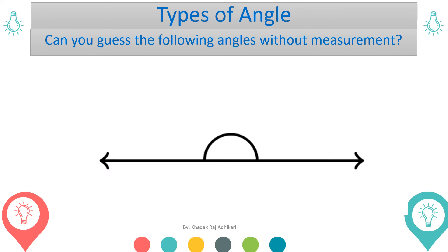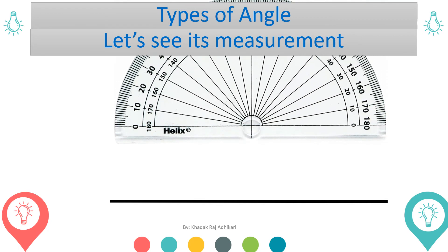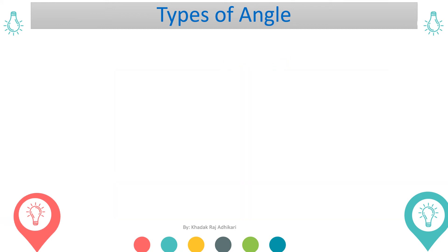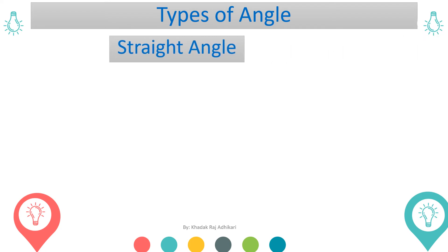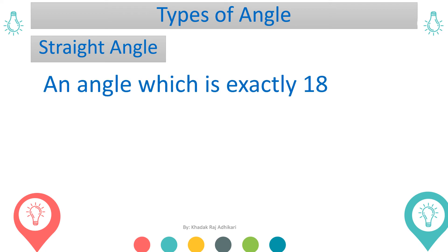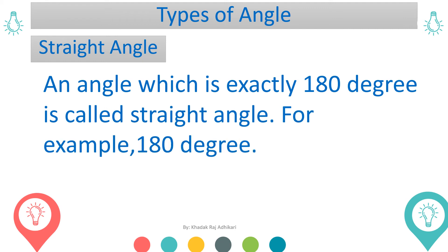Similarly, can you guess the measurement of this angle? I think this is easy. Let's take the measurement. This is a straight angle. The measurement is 180 degrees. An angle which is exactly 180 degrees is called a straight angle.